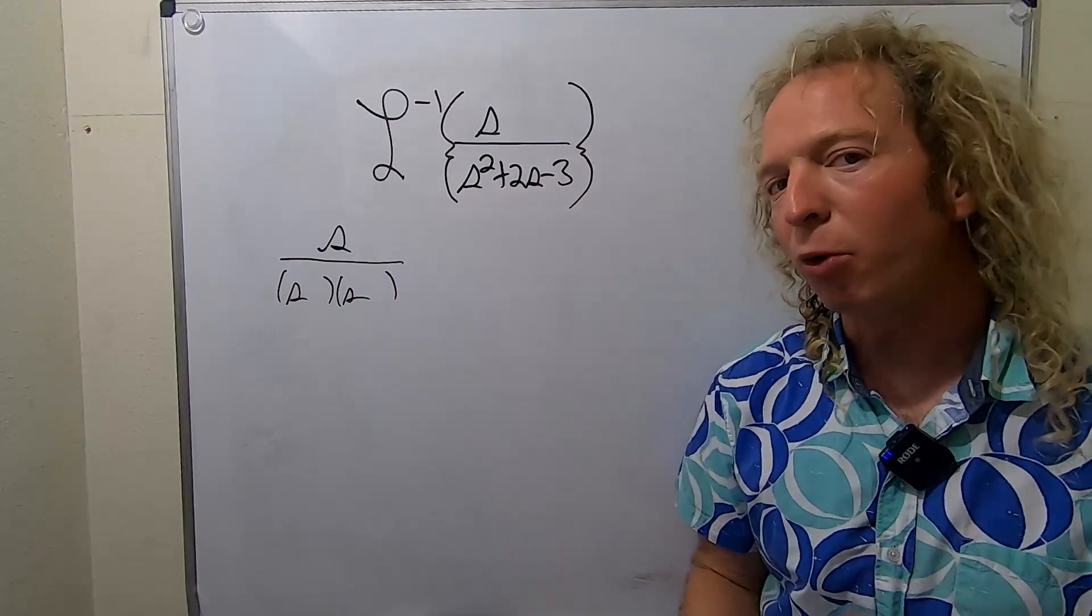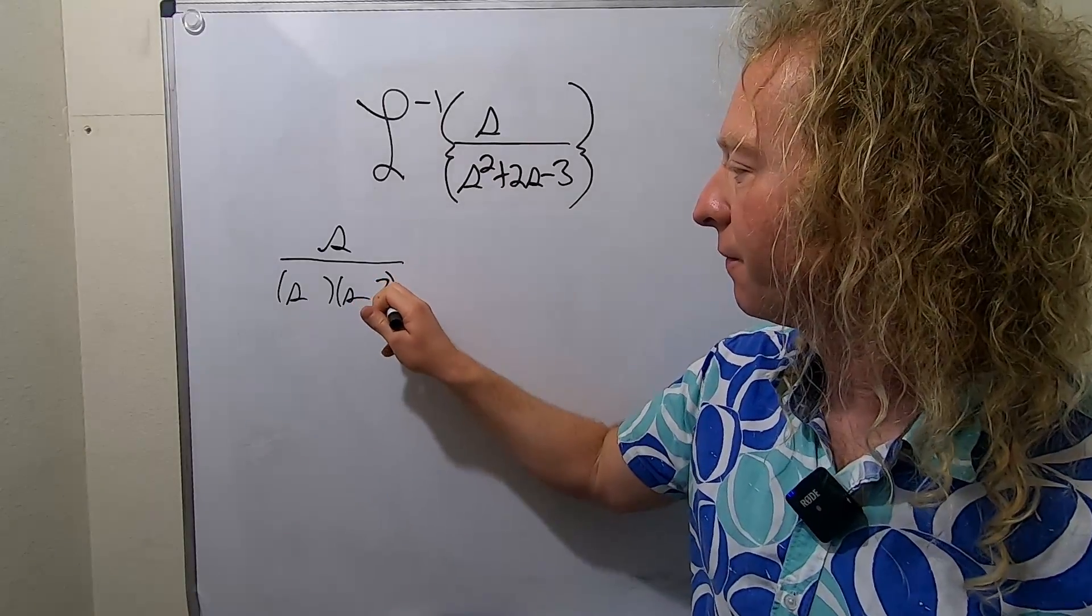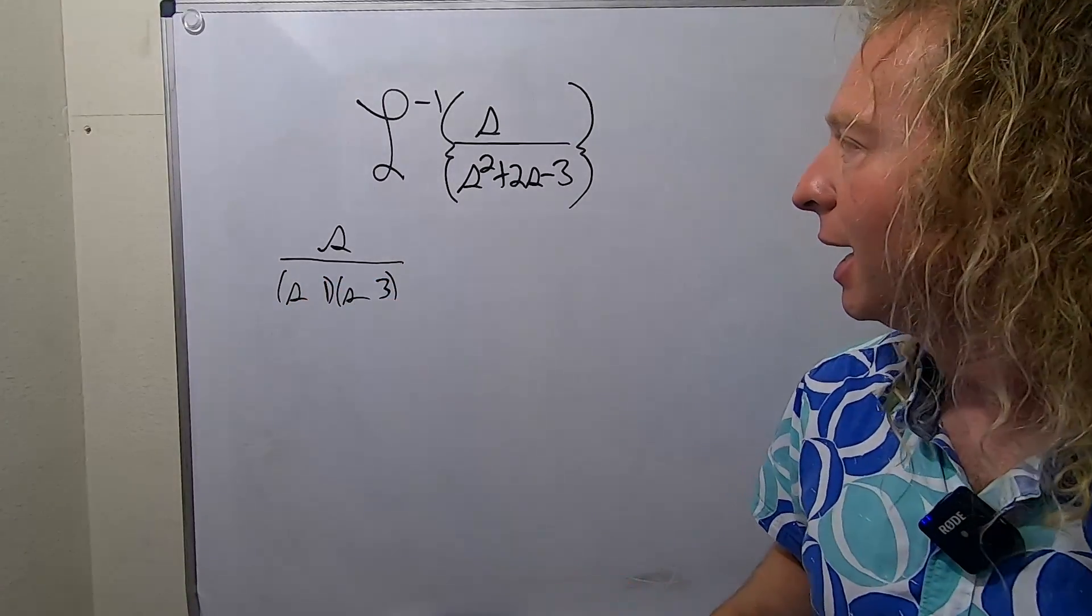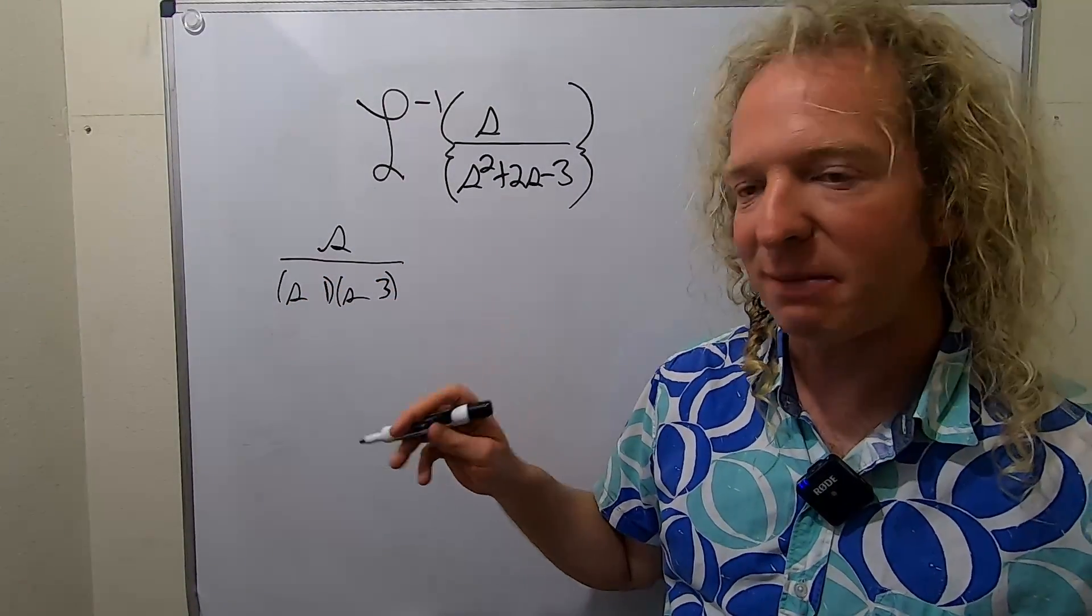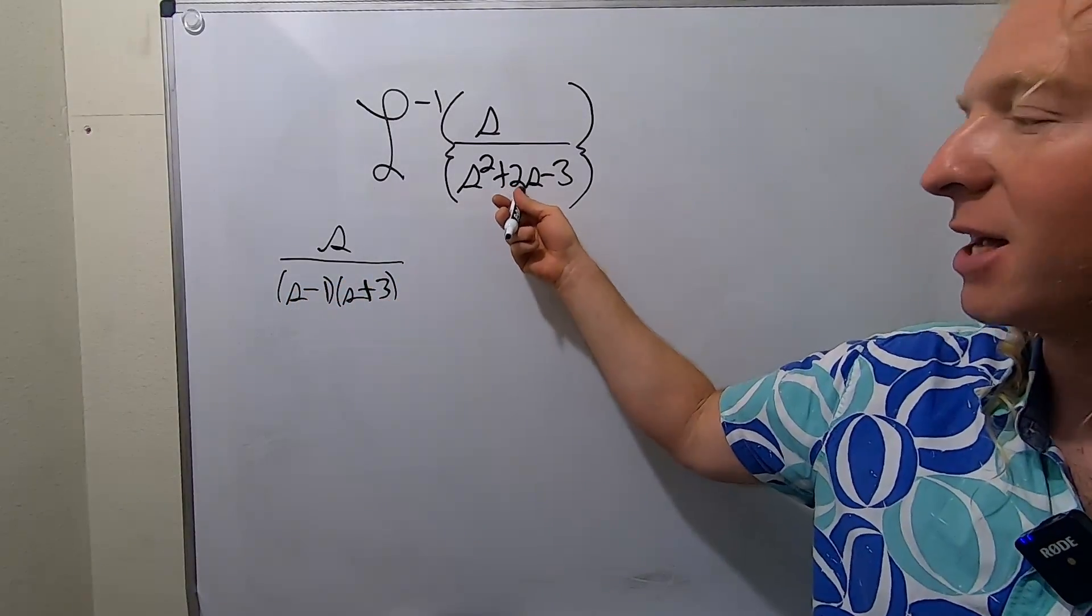So looks like we need two numbers that multiply to negative 3 and add to 2. So I'm thinking 3 and 1, yep. And I think the 3 has to be positive, and the 1 has to be negative because they have to add to a positive 2.